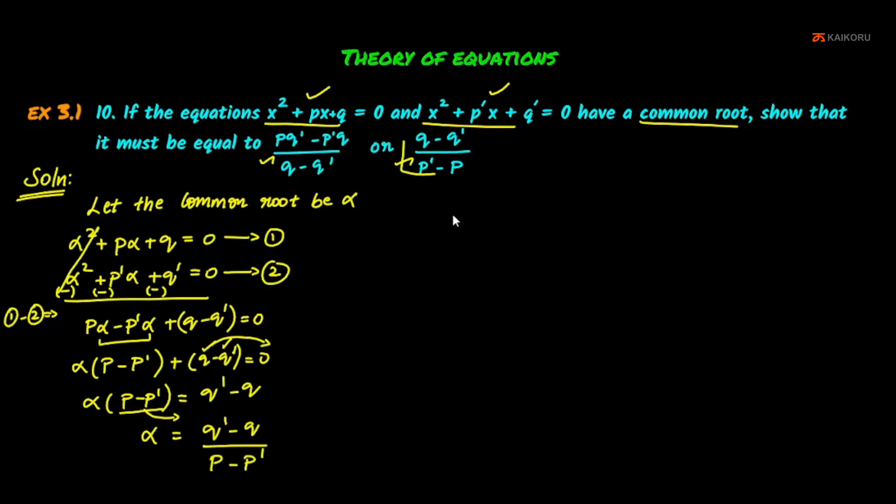If you compare it, it is the same. With symbol change, we get (q - q')/(p' - p). If we compare it, it is the same. We get p' - p in the denominator. We can cancel this minus minus. Now we have proved one root.